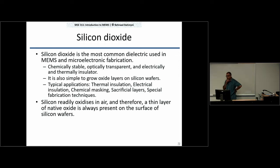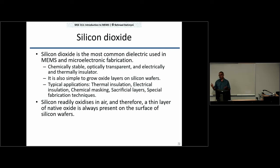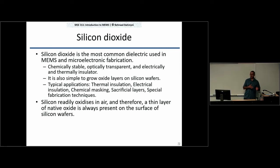One of the reasons silicon replaced germanium in the microelectronics industry was actually the existence of silicon dioxide. Germanium also reacts with oxygen to form germanium dioxide, but germanium dioxide is soluble in water. In microelectronic fabrication there are many wet steps where wafers are dipped in water-based liquids, and the germanium oxide would be washed away every time. Silicon dioxide, by contrast, is stable.